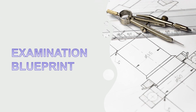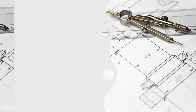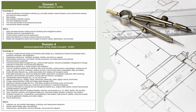Let's talk about the examination blueprint. It contains nine domains, each distributed with a weightage of marks. Domain 1 is Advanced Science and Mathematics, containing 9.95 percent weightage, covering knowledge and skills in those areas. Domain 2 is Management Systems, with 13.34 percent weightage, which you can refer to in the slides. Domain 3 is Risk Management, with 14.49 percent weightage. Domain 4 is Advanced Application of Key Safety Concepts, with 14.69 percent weightage, requiring knowledge and skills in those areas.